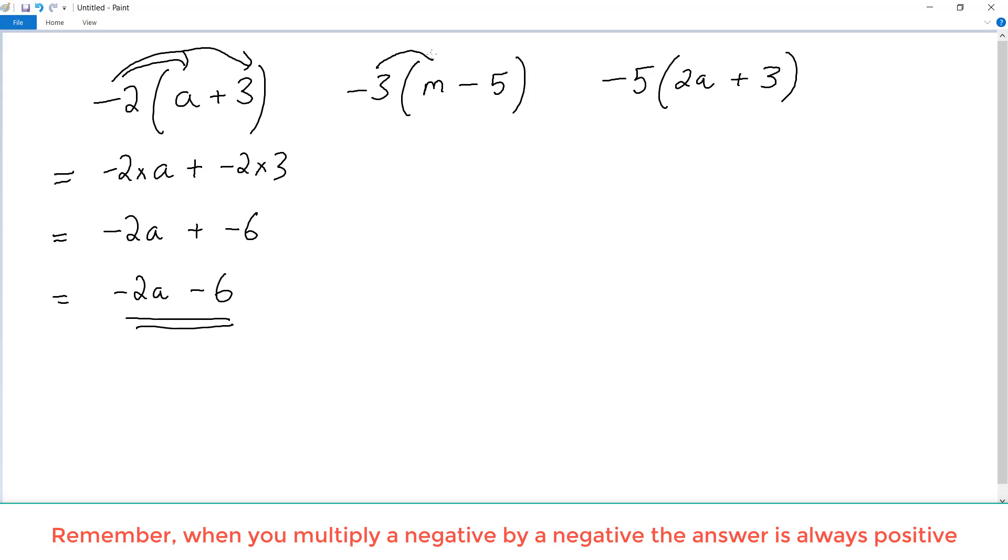Now let's look at it again. This time we've got negative 3 times the m, and negative 3 times the 5. So I've got negative 3 times m. Now we can put the plus in this time, so plus, and negative 3 times the negative 5.